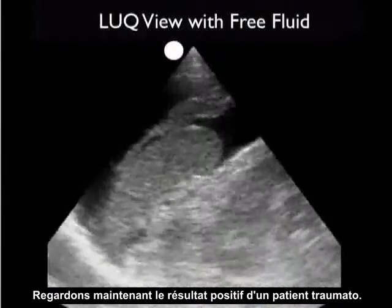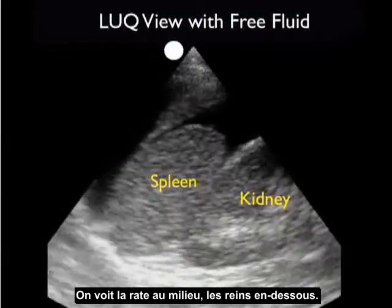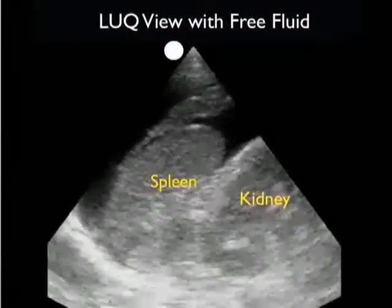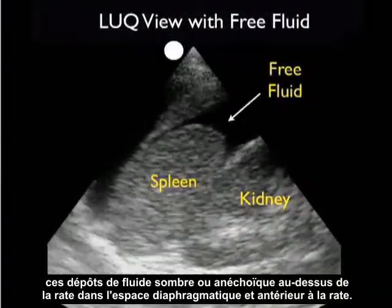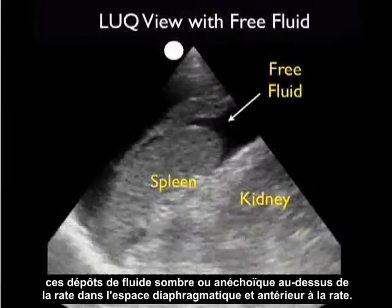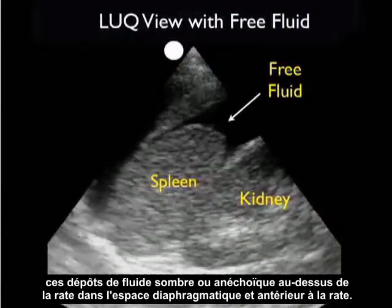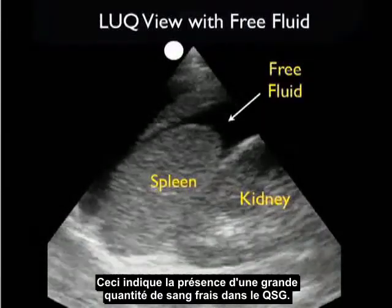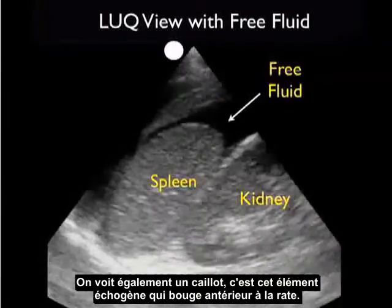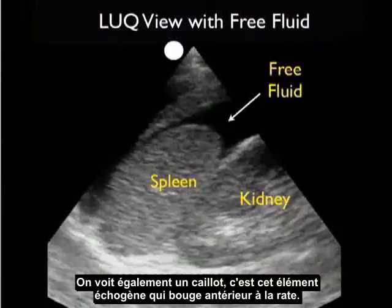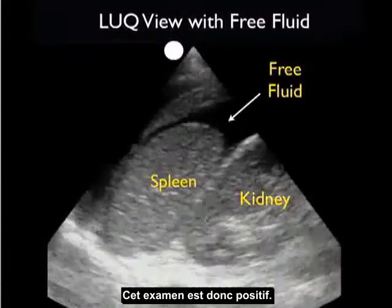Now let's look at a positive exam from a trauma patient. We see the spleen in the middle of the image, the kidney inferiorly, and notice the large amount of fresh fluid — that dark or anechoic collection layering out above the spleen in the infradiaphragmatic location and anterior to the spleen. This indicates a large amount of fresh blood in the left upper quadrant. We also see a blood clot — that echogenic material waving around anteriorly to the spleen — confirming a positive exam.